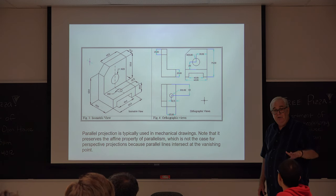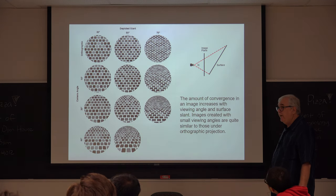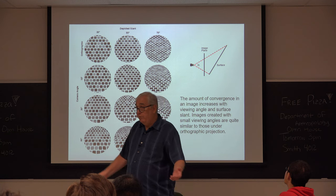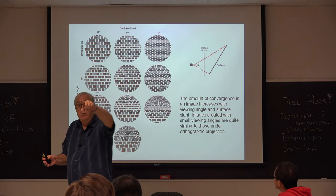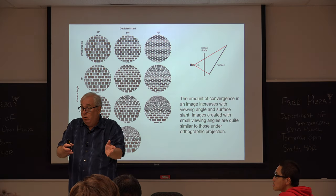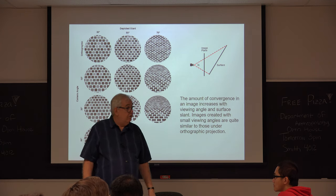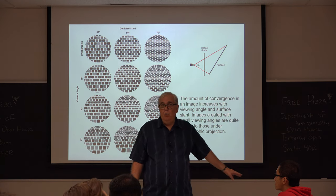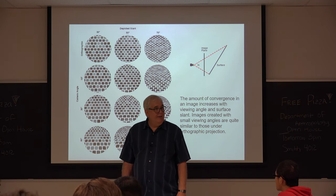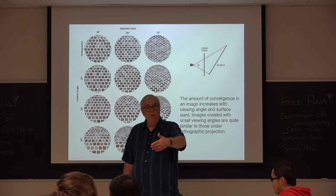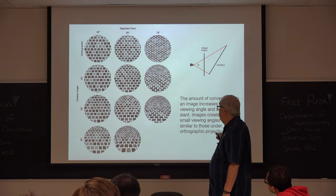The projections people use in art are a matter of convenience or preference. In vision, there's actually a continuum: when you look at something up close with a big visual angle, there's a lot of perspective. Looking at someone in the back row with a small visual angle, the amount of perspective decreases and quickly approximates orthographic projection. Because the mathematics of polar projection is more complicated, a lot of people simplify their models using orthographic projection — but this is only really valid for fairly small visual angles.